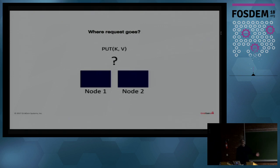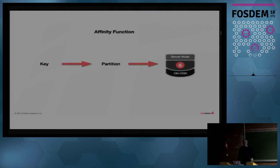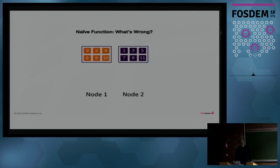Ignite is essentially a hashed partitioned map — that's really what it does. When we want to put a key and its value, we apply some algorithm, and across a cluster that determines how data are distributed. Generally that's taken care of for us — we don't need to worry about it. The other thing is that we might think balanced partitioning is a good thing. Using some naive function, it distributes things evenly across the cluster. Here we've got a very simple two-node cluster: six partitions on one node and six on another — that seems fairly reasonable.